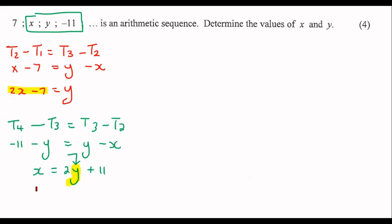And so what that would look like is the following. So we can say that x will be equal to 2 times 2x minus 7 plus 11. And so x will be equal to 4x minus 14 plus 11. And so if you eventually solve this, we should find that 3x will be equal to 3. And so x will be equal to 1.